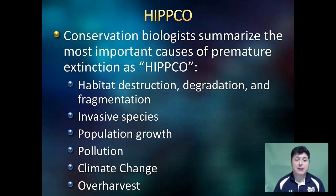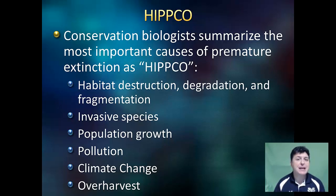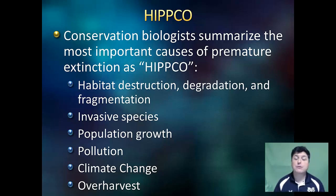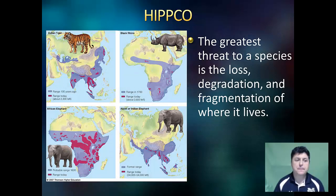Conservation biologists can summarize the most important causes of premature extinction as HIPCO. It used to be HIPPO, but we've added an additional C to include climate change. H stands for habitat destruction, degradation, and fragmentation. I stands for invasive species. P for population growth. P for pollution. O for overharvest. Scientists believe that the greatest threat to a species is the loss, degradation, and fragmentation of where it lives.